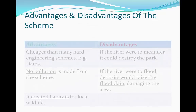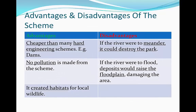Here are some pros and cons of the restoration of the River Quaggy by diverting the river into another direction. An advantage is that it's cheaper compared to many hard engineering schemes. For example, in our last video we looked at the Three Gorges Dam, which cost £25 billion to build. It surely didn't even cost a fraction of that amount to divert the river through Sutcliffe Park. Also, no pollution was made from the scheme — when building the Three Gorges Dam a lot of fossil fuels had to be used, however to divert the channel back into the park no pollution was produced.